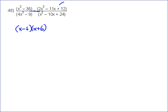Then we need to try to factor the next expression, so I'm going to put in my two parentheses. That's going to give me 2x and x — that's the only way to get 2x squared. Now I've got to think about how to get 12, but I need a negative, so I'm going to need a negative and a negative. That's the only way to get positive 12 and negative 11. My options are 1 times 12, 2 times 6, or 3 times 4.